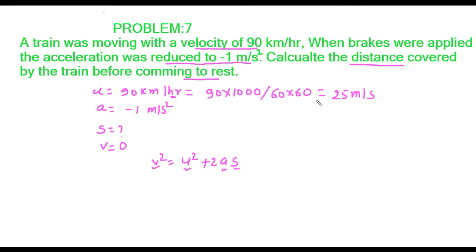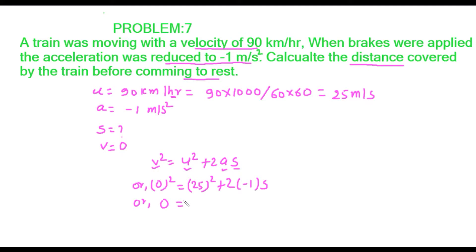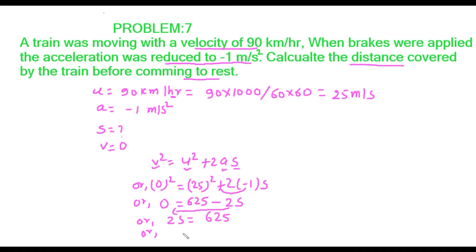So the initial velocity u is 25 meters per second. V is 0, so 0² = 25² + 2 × (−1) × s. That gives 0 = 625 − 2s, so 2s = 625.